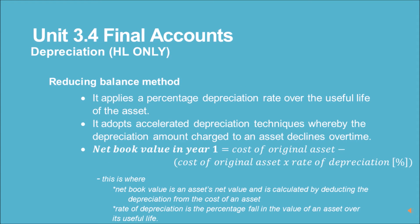Reducing Balance Method: It applies a percentage depreciation rate over the useful life of the asset. It adopts accelerated depreciation techniques whereby the depreciation amount charged to an asset declines over time. Net book value in year 1 = Cost of original asset − (Cost of original asset × Rate of depreciation). Net book value is an asset's net value, calculated by deducting the depreciation from the cost of an asset. Rate of depreciation is the percentage fall in the value of an asset over its useful life.